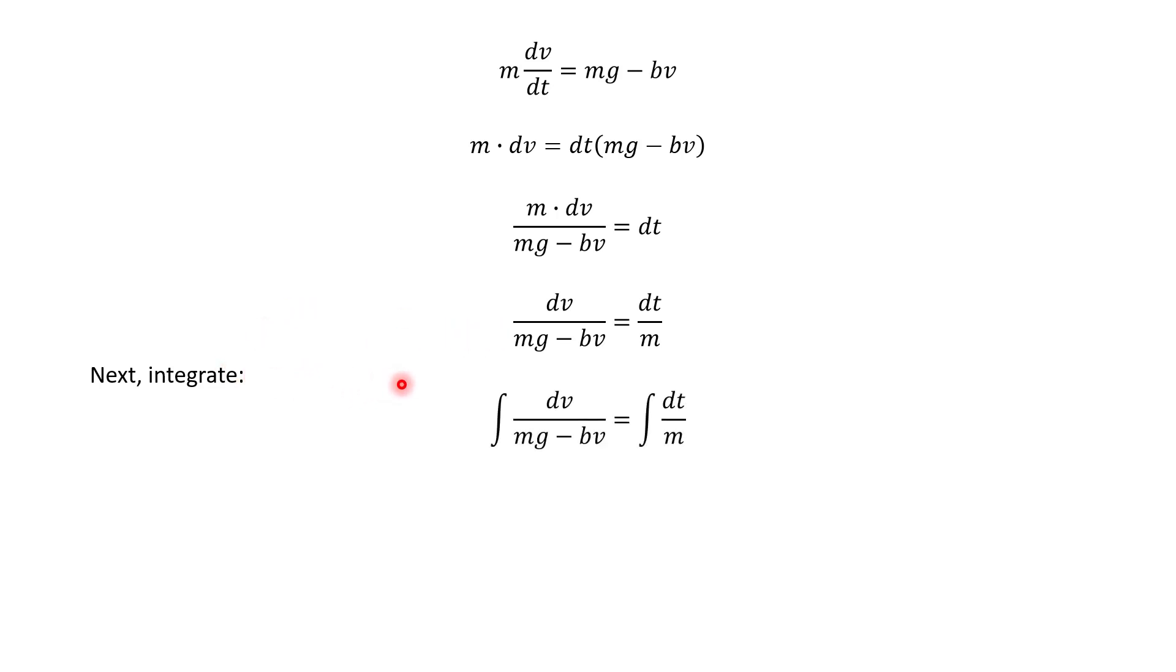Because remember, what you're trying to solve for is the unknown original function. We have an equation involving the derivative of that function, so we want to know what was the original function, so that's why we're going to integrate. So just a little bit of rearranging, I move the dv to the back here, dt to the back.